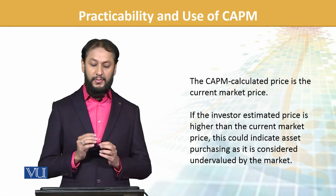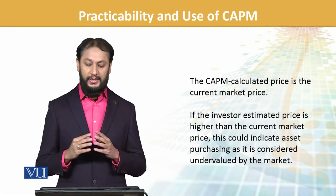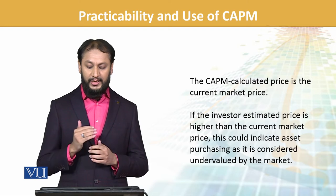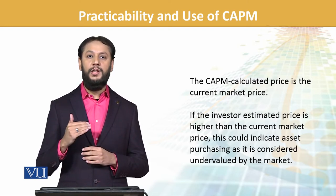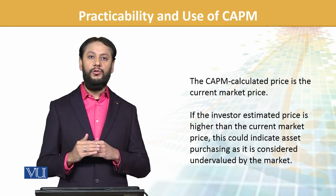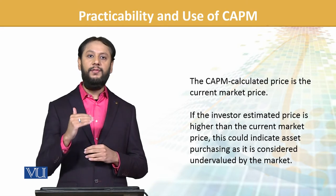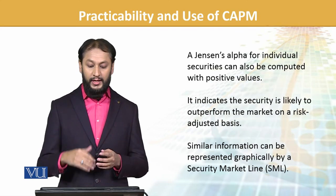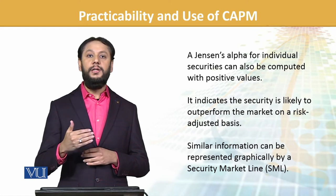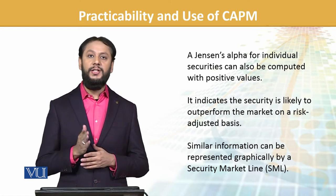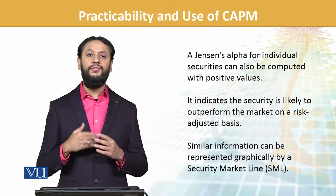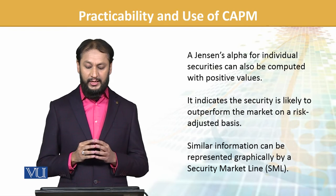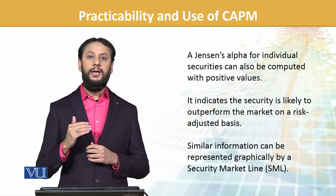The CAPM-calculated price is the current market price — that is the CAPM fair pricing. If an investor's estimated price is higher than the current market price, this could indicate that the asset is considered undervalued by the market. For example, if we calculate a value of 80 but the market values it at 70, then to the market that asset is undervalued. This will also provide extra return in the future, which is called Jensen's Alpha. Jensen's Alpha computed with a positive value indicates a security is likely to outperform the market on a risk-adjusted basis.